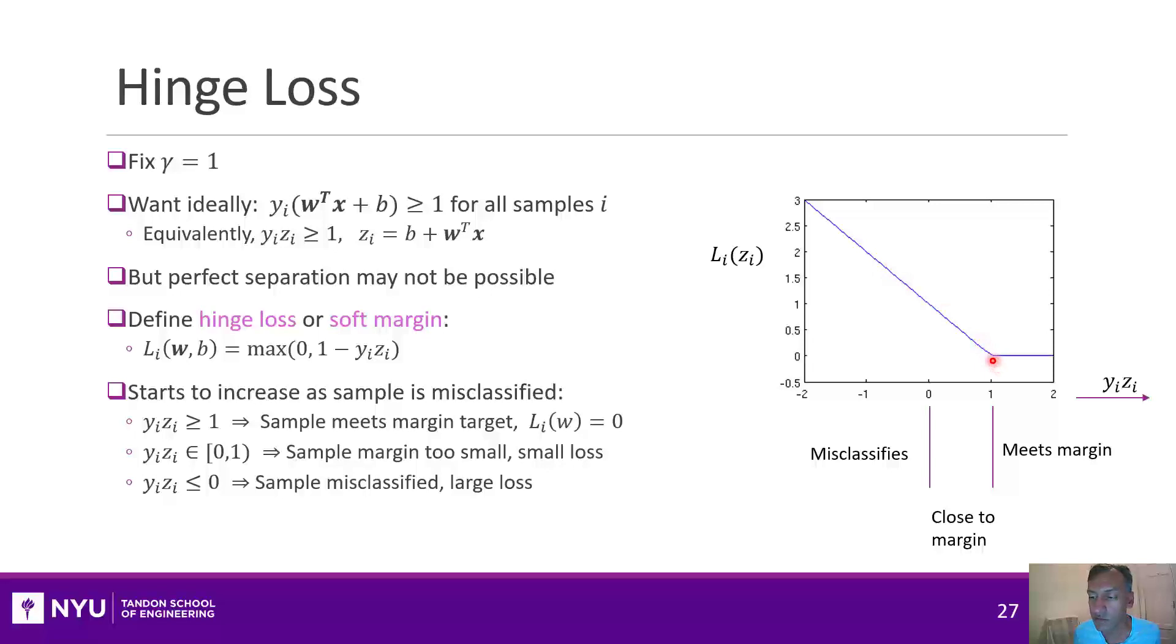Within this region, there's two important regions. Between zero and one is the point where we're violating this distance that we wanted, but we're still classifying the sample correctly. It's classifying the sample correctly because zi is the same sign as yi. But beyond this, I'm even allowing points to be misclassified, and that will happen when this value is less than zero. I'll make you do some calculations to make sure you understand that concept.